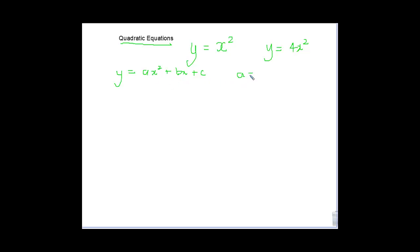The only thing is a cannot be equal to zero. So if you want to look at your definition of a quadratic equation, that would be it. And the resulting graph would be a parabola.